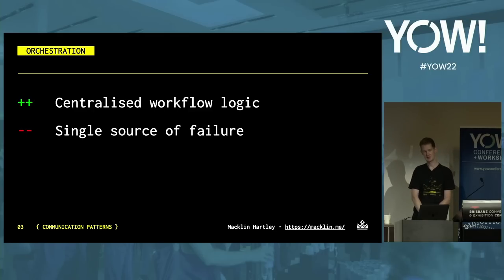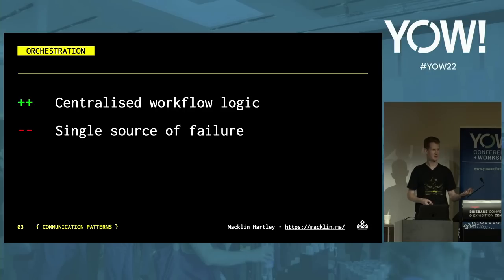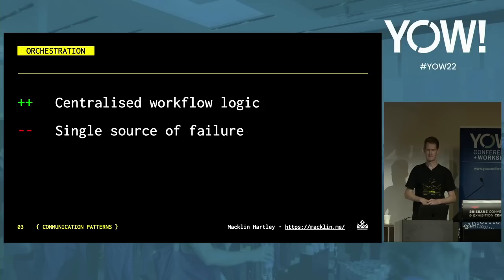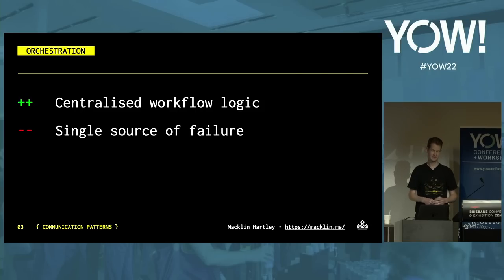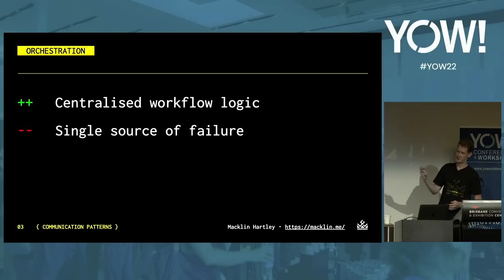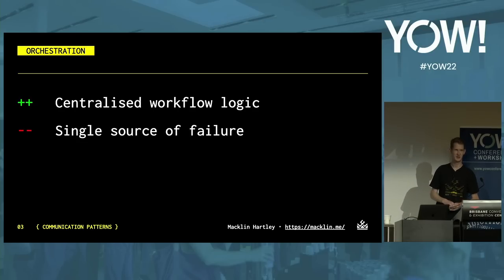With orchestration, the workflow logic is centralized. Events are still used to proceed through the workflow, but commands are also used by the orchestrator to communicate with services. If someone wants to figure out the current state of the workflow, they can go to the orchestrator. However, this also means the workflow has a single source of failure — if it ever goes down, the whole workflow stops. In the end, our team decided to implement the orchestration pattern as they found the workflow logic was easier to understand in a single place, and they did want to be able to track the progress of this workflow.